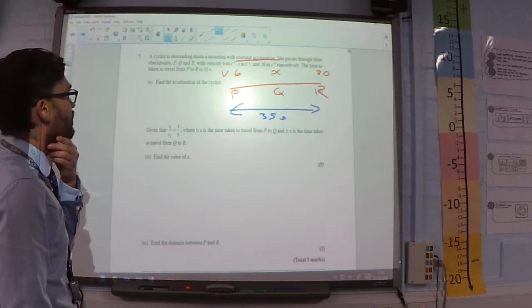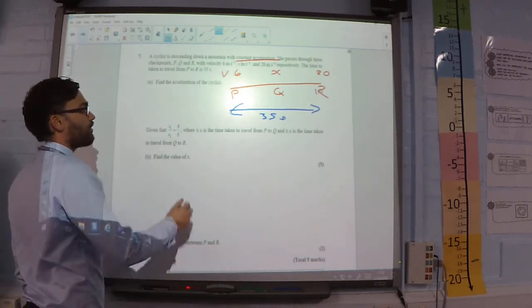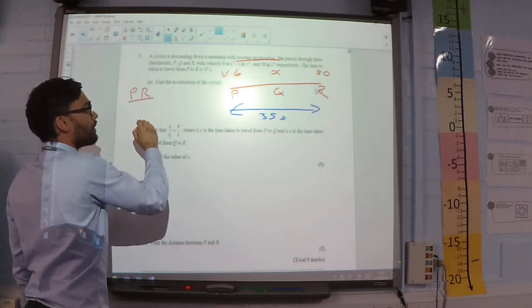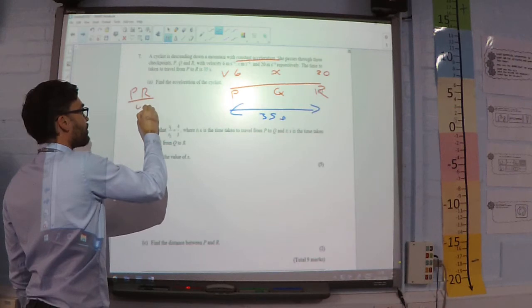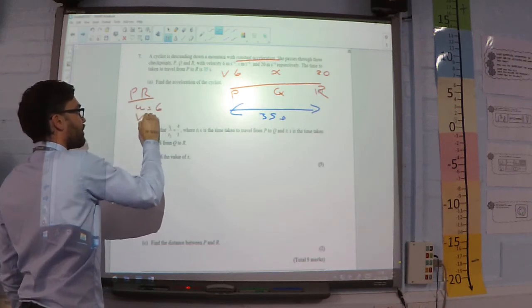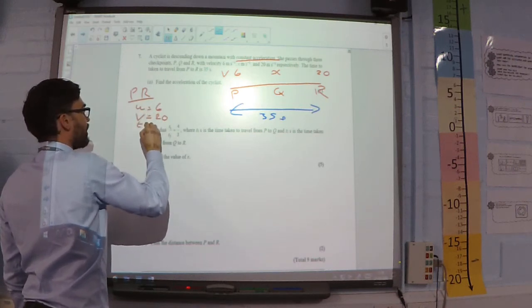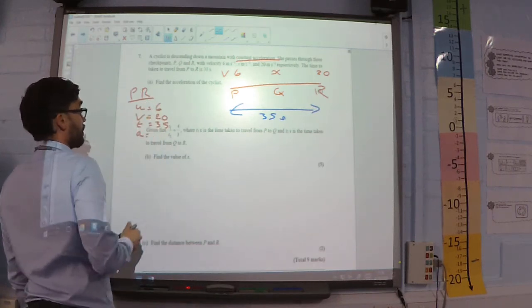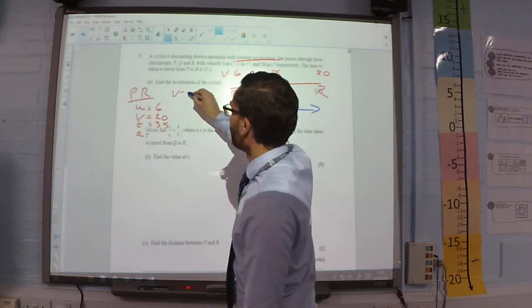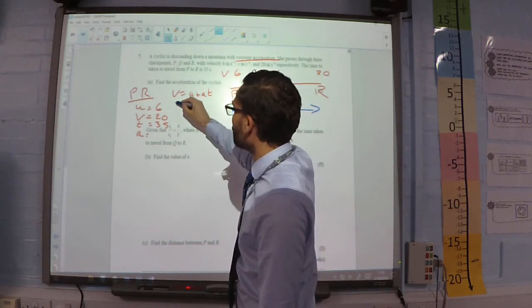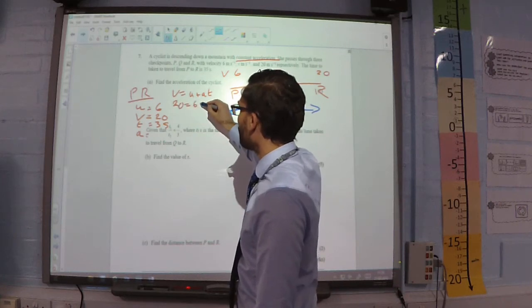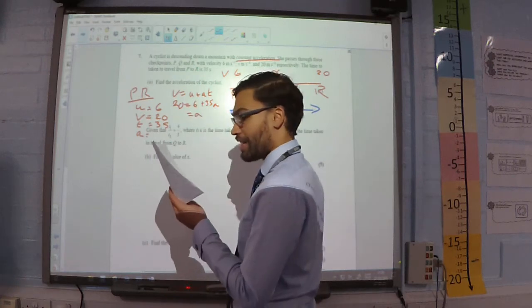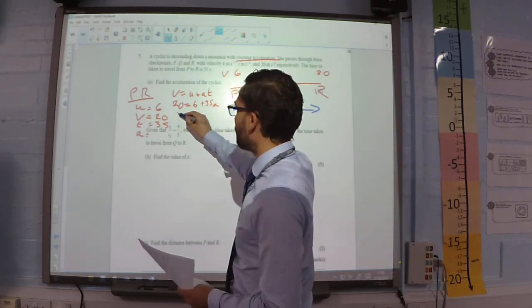Find the acceleration of the cyclist. So, we've got enough information if we go just from P to R. So, from P to R, we've got that the initial velocity is 6. The final velocity in this case would be 20. The time is 35 seconds and we want to know what acceleration is. So, V is equal to U plus AT. So, 20 is equal to 6 plus 35A. And, that tells me that A must be 0.4.